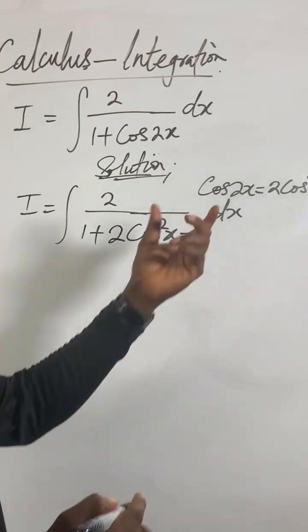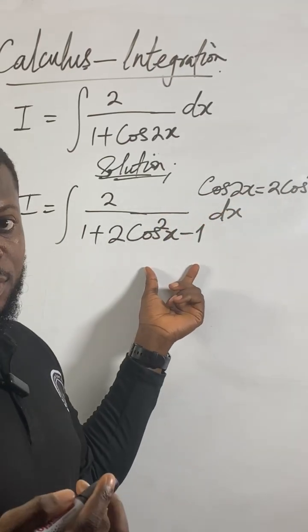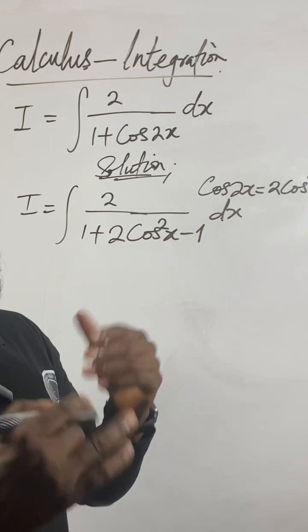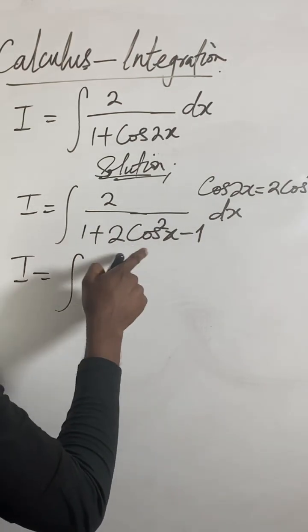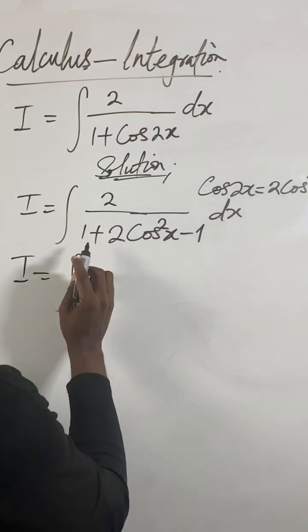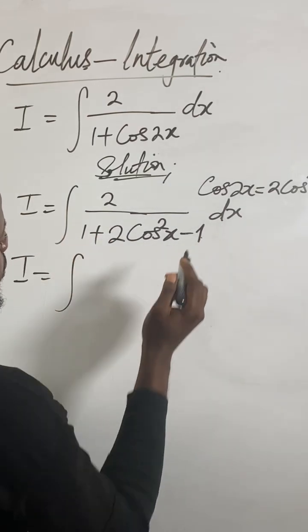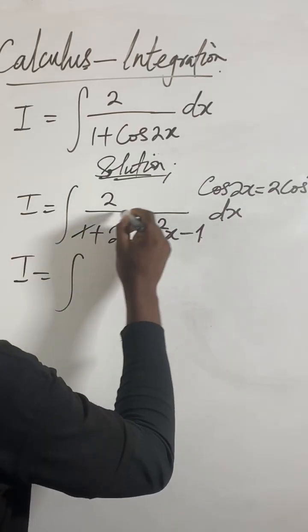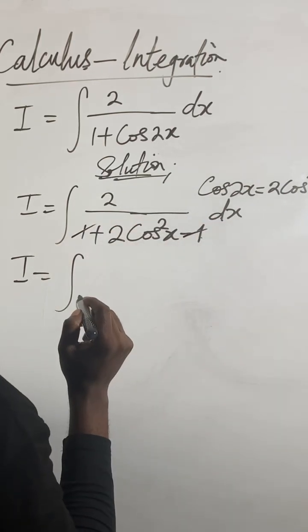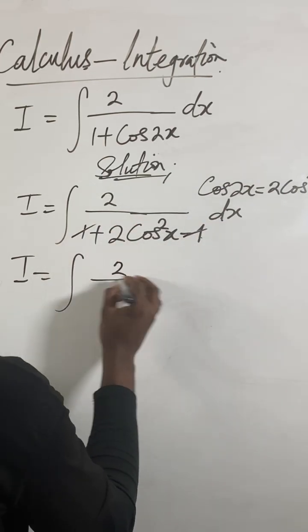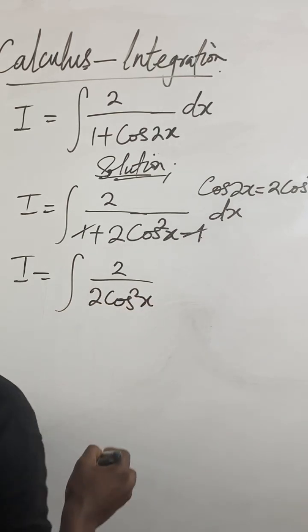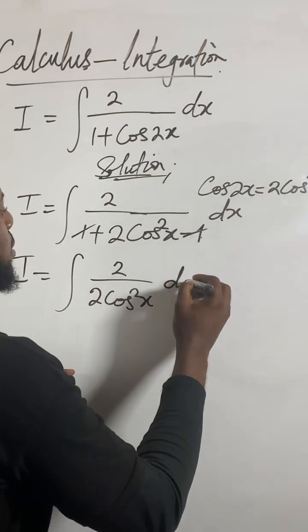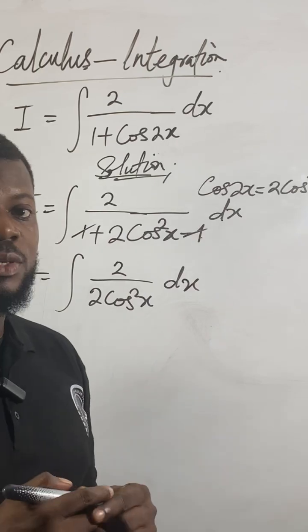Right now, the integral of—I still haven't integrated yet—I just notice that 1 minus 1 would be 0. So if you cancel out this one, we're thinking on the element now: 2 over 2cos²x with respect to x.